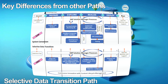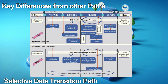Let's compare key differences between selective data transition and other paths. The prime difference between system conversions and selective data transitions is the use of tools: you use Software Update Manager (SUM) for system conversion and convert the data, whereas you use DMLT for selective data transition and migrate the data. The selective data transition approach requires data migration of limited master and transactional data due to the consolidation or splitting of several systems. We can compare new implementations, system conversions, and selective data transition using a number of characteristics.